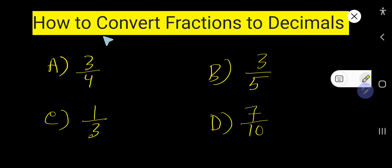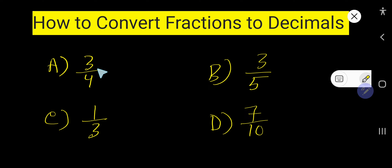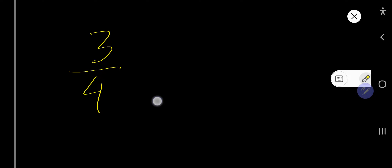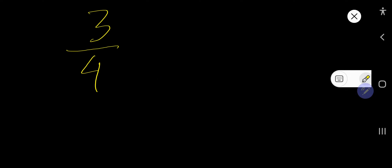In this video I am going to teach you how to convert fractions to decimals. Look, these all are fractions and I would like to convert these fractions to decimals. So let's start with the first fraction. Our first fraction is 3 over 4. So how to convert this fraction to decimal? I will show you two methods.